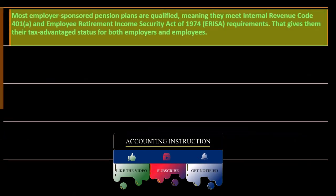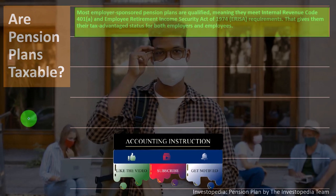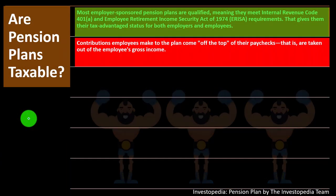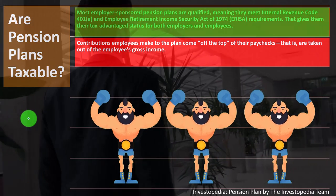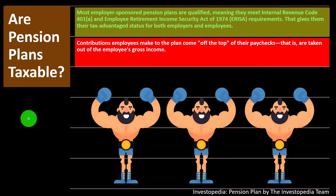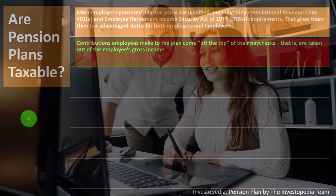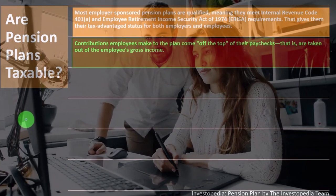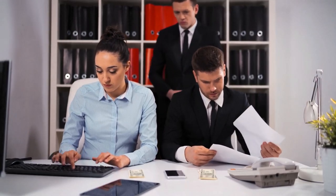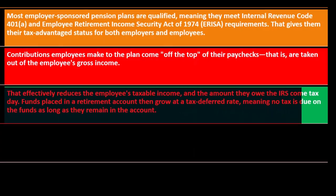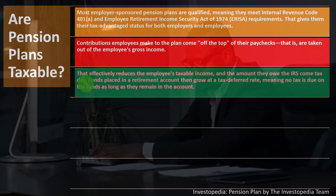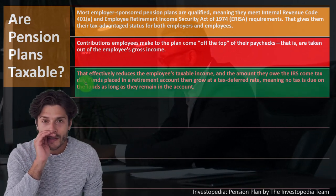Most employer-sponsored pension plans are qualified, meaning they meet Internal Revenue Code 401(a) and ERISA 1974 requirements, giving them tax-advantaged status for both employers and employees. Employee contributions come off the top of their paychecks — taken from gross income — which effectively reduces taxable income and the amount owed at tax time. This tax deferral is reflected on the W-2, where Box 1 (federal taxable income) is lower than Box 5 (Medicare wages) due to 401k contributions.